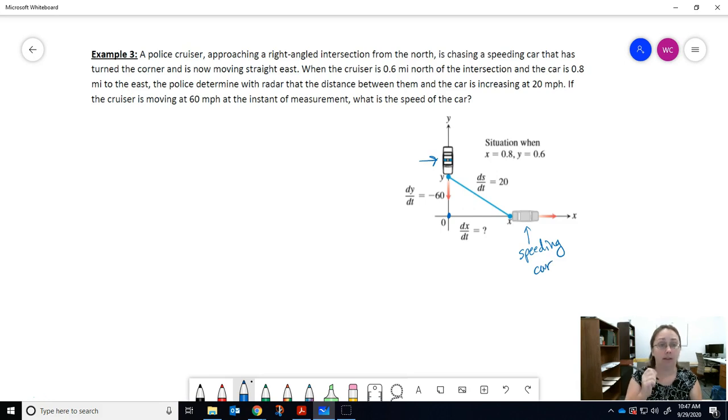When the cruiser is 0.6 miles north of the intersection, this distance here is our y value. And the speeding car is 0.8 miles to the east, so x is 0.8 miles. This is the information given, but it says when this happens, so this is a moment in time that we're interested in.